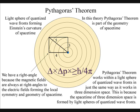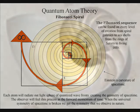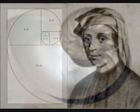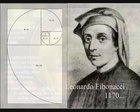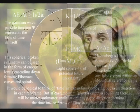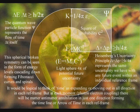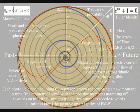This spherical geometry can be seen as 4π in the equations of quantum mechanics. When this symmetry is broken, it forms spiral symmetry, forming the Fibonacci ratio that we see almost everywhere in nature.